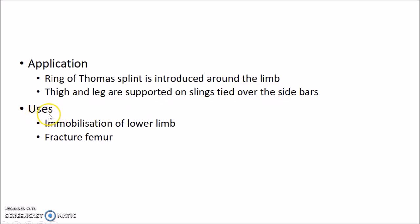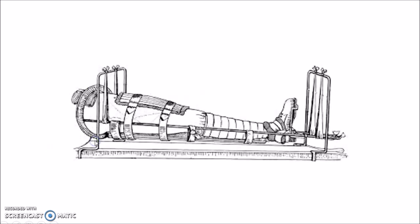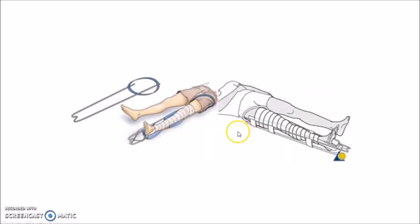Thomas splint is mainly used for immobilization of the lower limb. It is useful in cases like fracture of the femur. This picture shows a patient with a Thomas splint applied.